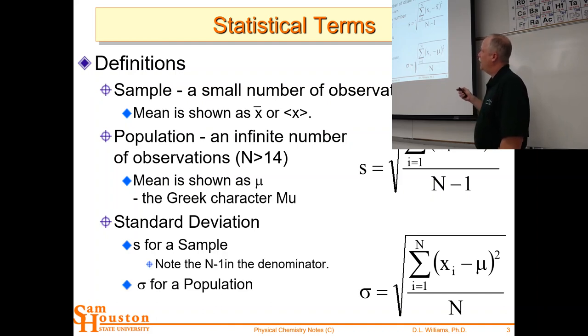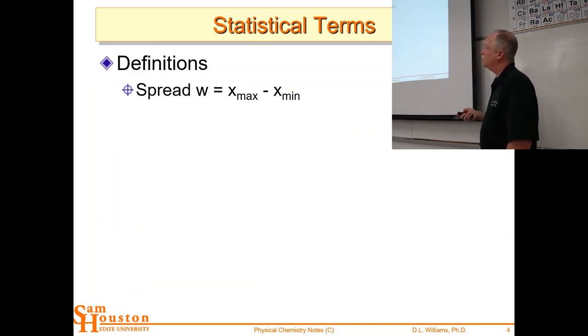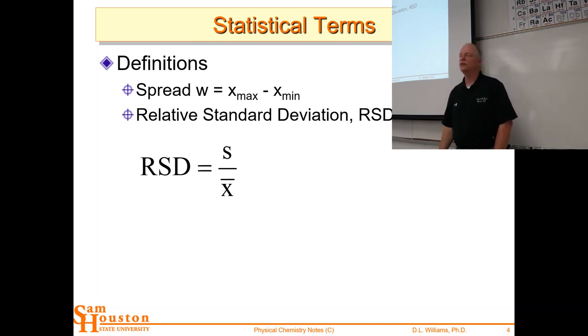Now, if we have a population that minus 1 is simply irrelevant, and so we can simplify it a little bit. Now, this value tells us the uncertainty, because if the deviations are large, then our uncertainty is large. The deviations are small, we're very certain about that value. And so then we use some of these other terms. The spread in the data is max minus min. And we have these relative standard deviations. So if we take the standard deviation and we divide by the mean, we're saying it's relative to the mean. How big is it relative to the mean? So that's the RSD. So the uncertainty divided by the mean value is the RSD.